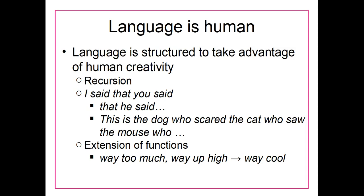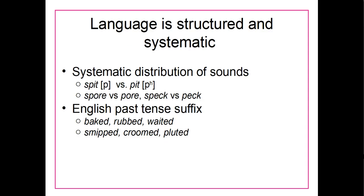Basically, human language is structured to take advantage of human creativity. Animals tend not to be able to do this — they don't necessarily have the same creative capacity that humans do. Human language is structured and systematic, and some forms of animal communication can also be structured and systematic. Systematic distribution of sounds is one way that human language can be very structured and systematic.